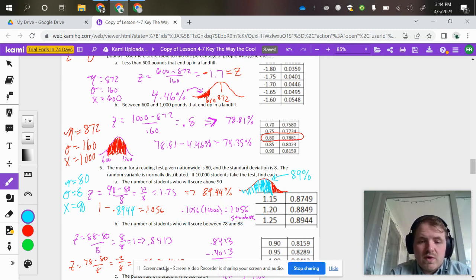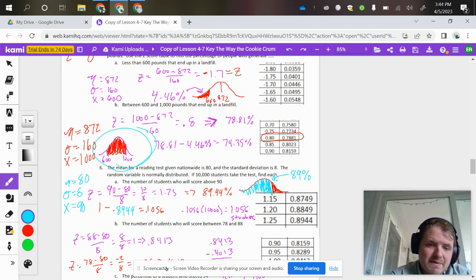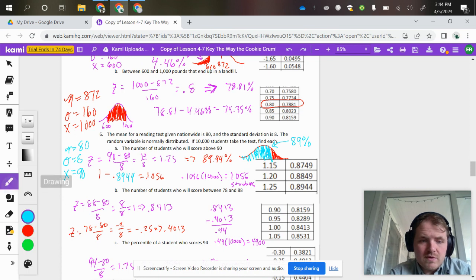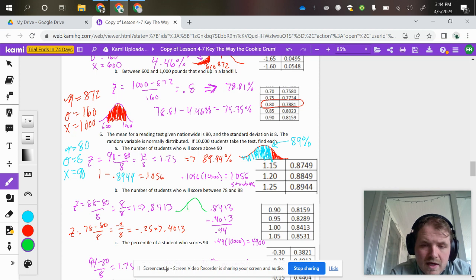Similar situation where it's asking for the number of students who will score between 78 and 88. Anytime you have a between situation, that's like this picture up here. If I draw a curve, with the mean at 80, 78 would be on the left side and 88 would be on the right side. You're trying to find this situation there.